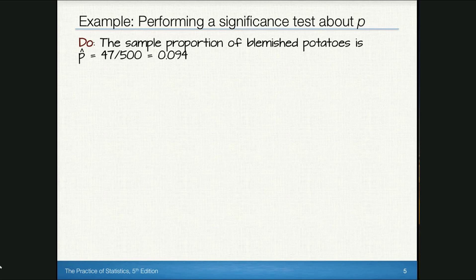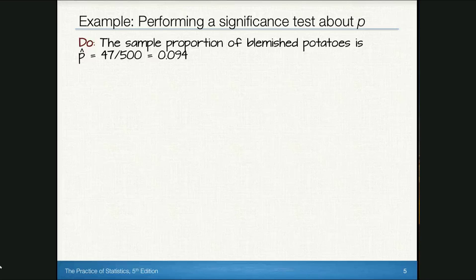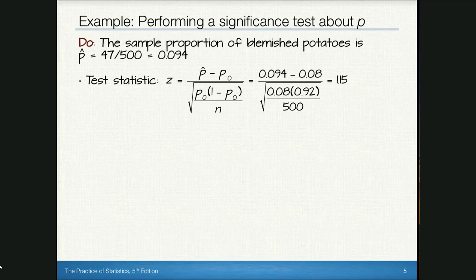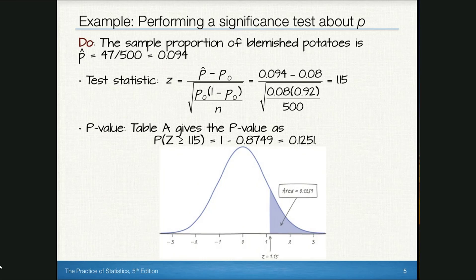Now we Do the problem. The sample proportion of blemished potatoes is p-hat = 47/500, or about 9.4% (0.094). That's greater than our null hypothesis of 8%, but we need to determine if it's significantly greater. We calculate a test statistic and standardize that value to find a z-score of 1.15. Using Table A or technology to find the p-value, we see that the p-value is 0.1251, or about 12.5%.